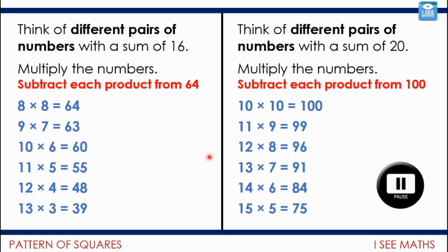Well, I wonder if you noticed anything about the pattern that's created. Let's have a little look. So 63 is 1 less than 64, 60 is 4 less, 55 is 9 less, 48 is 16 less, 39 is 25 less. And it's exactly the same on the right hand side example. 99 is 1 less than 100, 96 is 4 less than 100, 91 is 9 less than 100, and so on, the same pattern. Now do you notice anything about this particular pattern of numbers? They're all square numbers.